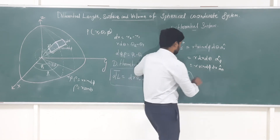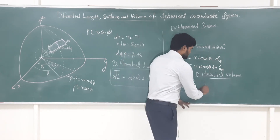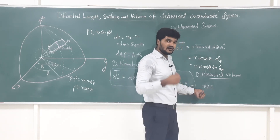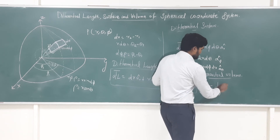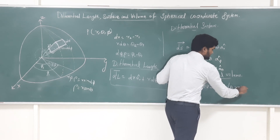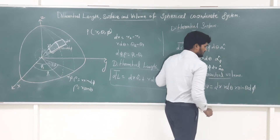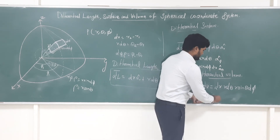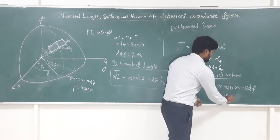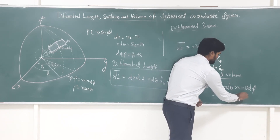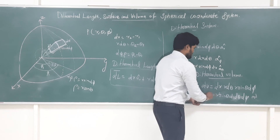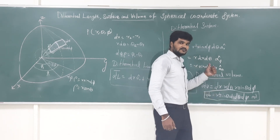Next is the differential volume dV. It is a scalar quantity. Just multiply all three directions: dr × r·dθ × r·sinθ·dφ, which gives dV = r²·sinθ·dr·dθ·dφ. The unit is meter cubed. This is the general differential volume equation of the spherical coordinate system.